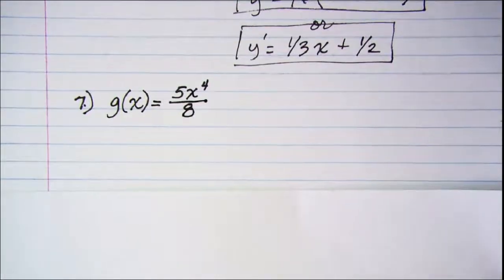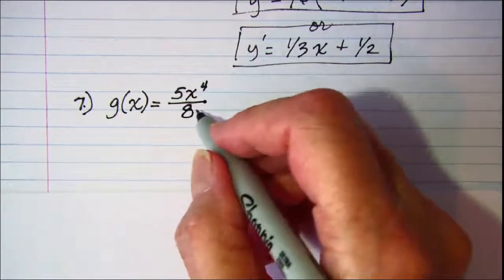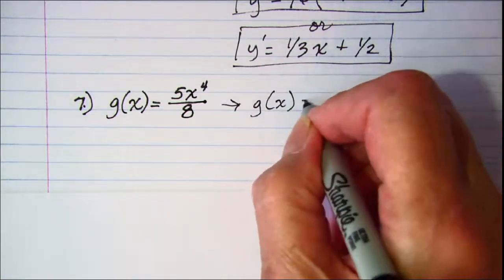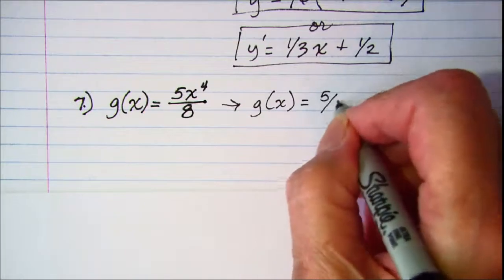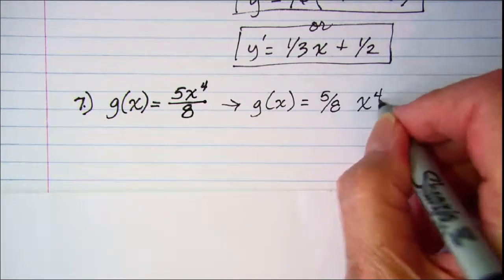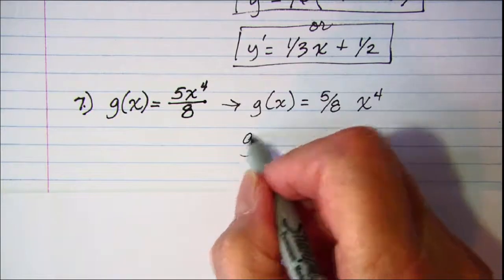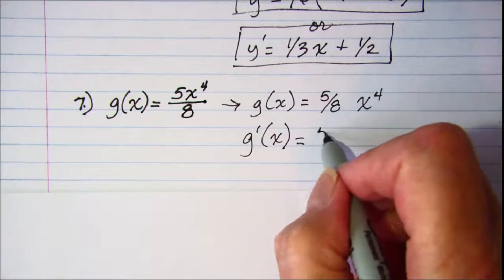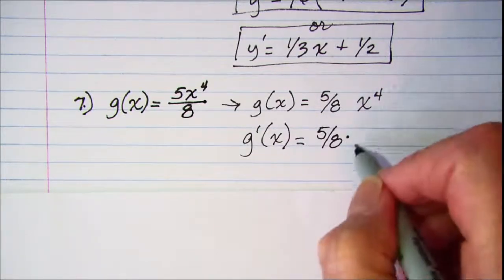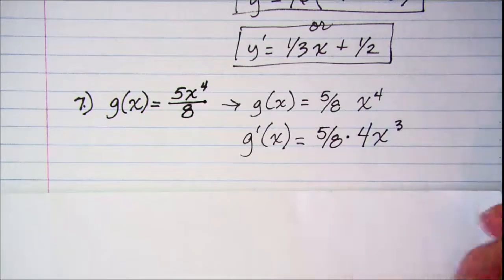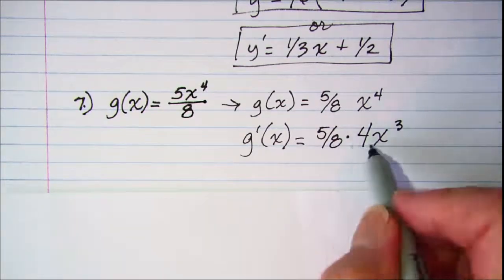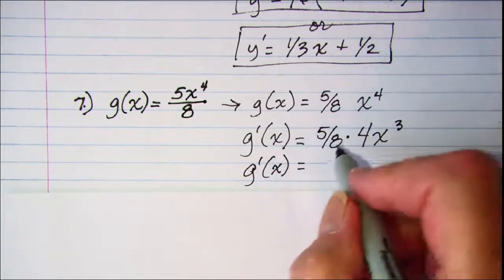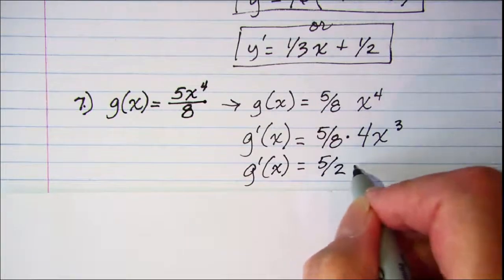Another one: we can separate the numerical coefficient from the variable. So g(x) = (5/8) times x to the fourth. The derivative is (5/8) times 4x to the third power. Doing the math, g′(x) = (5/2)x cubed.